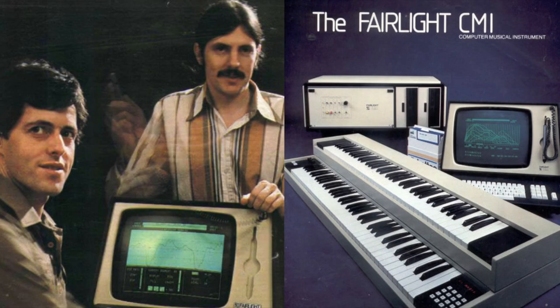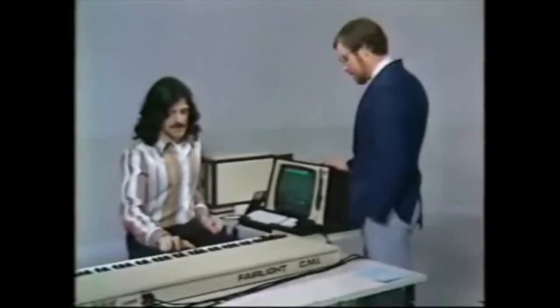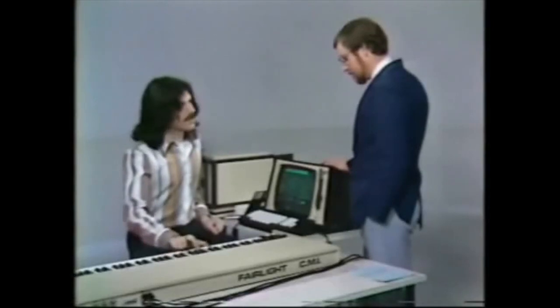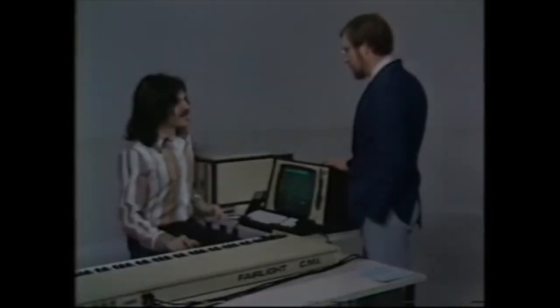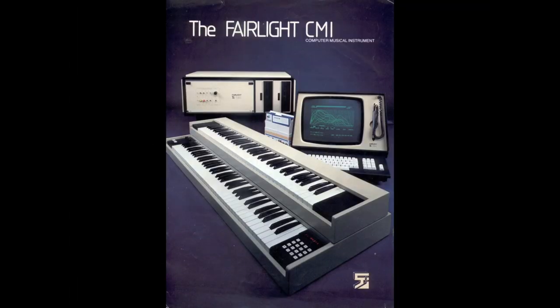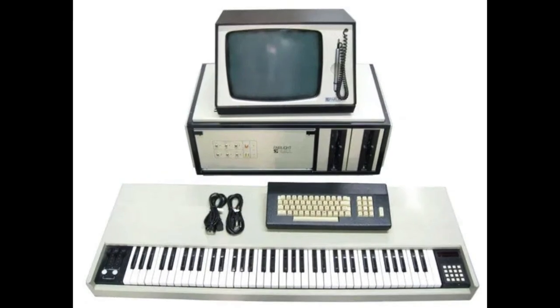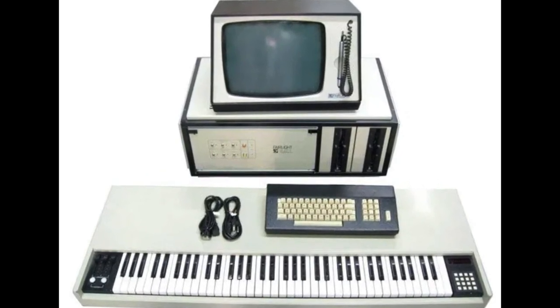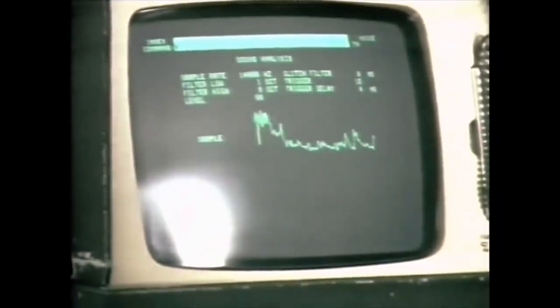This is what Kim Rari and Peter Vogel at Fairlight discovered in the late 1970s, coining the phrase 'sampling' to describe the recording and playback of sounds from digital memory. In 1979, the world's first digital sampler — the Fairlight CMI Model 1 — was released at a cost of about $25,000 US.